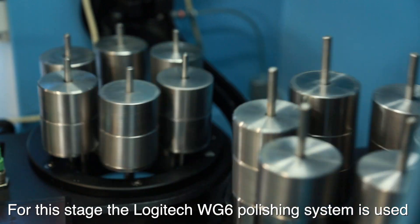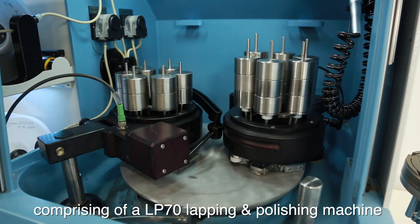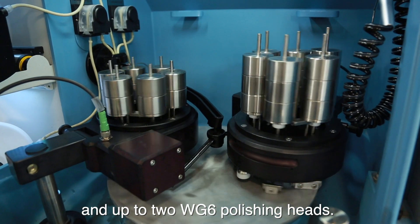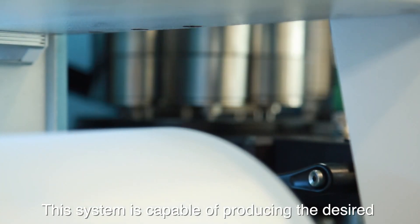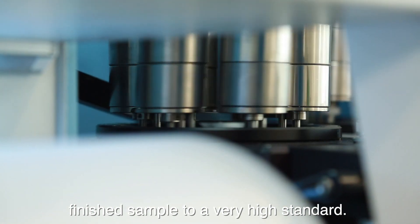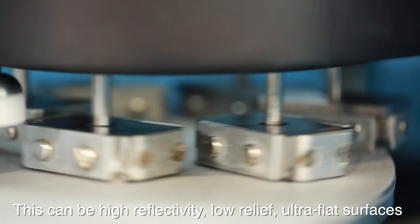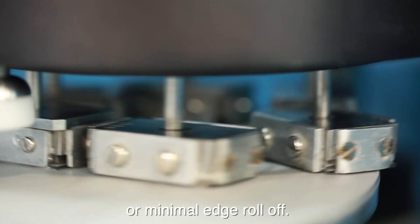For this stage, the Logitech WG-6 polishing system is used, comprising of an LP-70 lapping and polishing machine and up to two WG-6 polishing heads. This system is capable of producing the desired finished sample to a very high standard. This can be high reflectivity, low relief, ultra-flat surfaces or minimal edge roll-off.